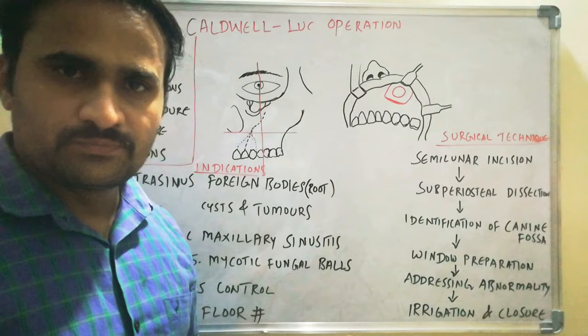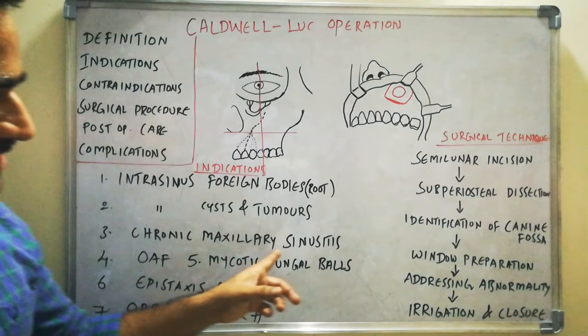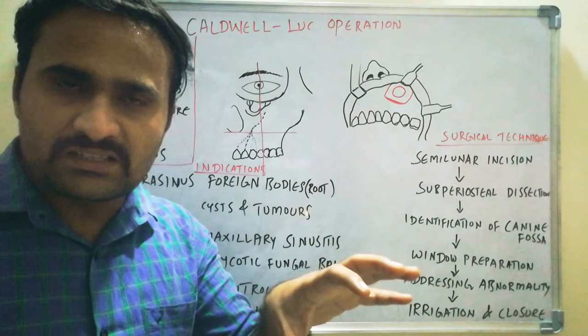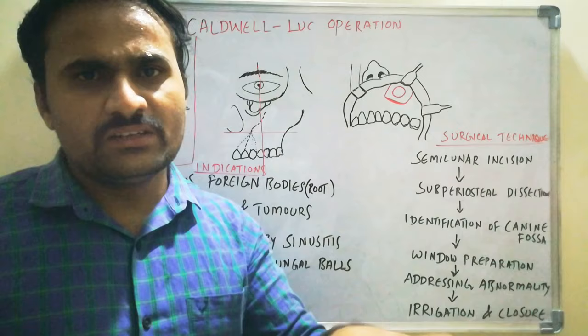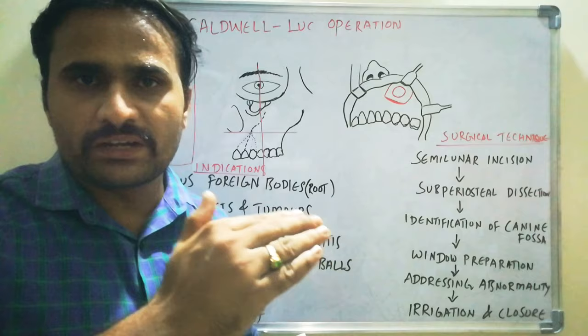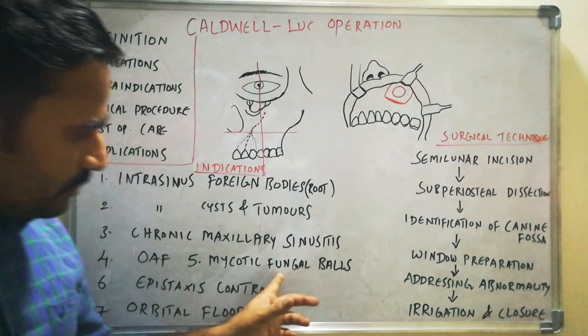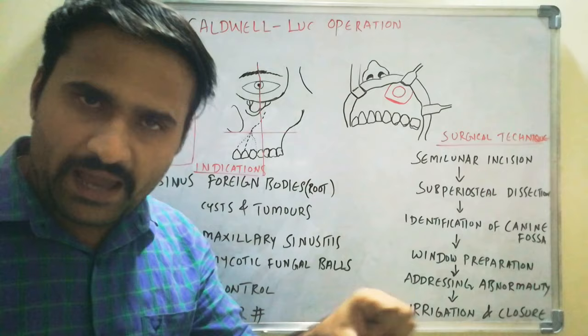For chronic Maxillary Sinusitis cases, you completely irrigate the Maxillary Sinus lining with normal saline or betadine. If the epithelial lining is infected and inflamed, you can completely remove it from the bone using a Howarthy Elevator or Periosteal Elevator to separate the lining from the bone. For OAF cases, the same applies. You can also remove fungal balls, place antral packing for epistaxis control, or address orbital floor fractures.